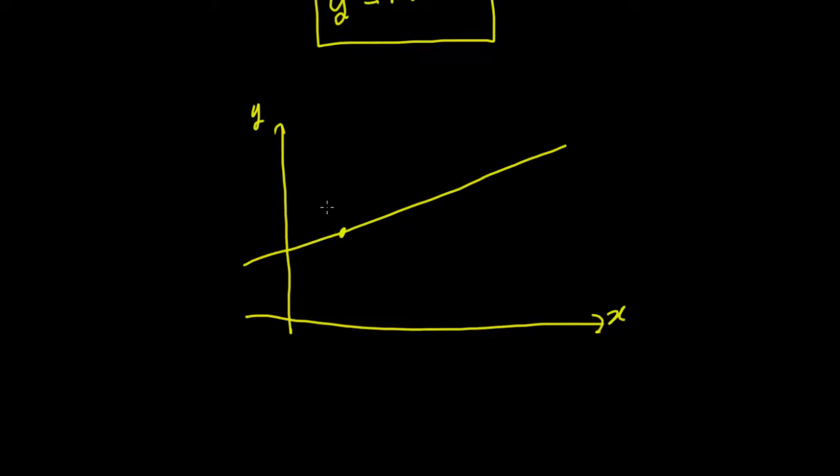Let's say that point there has got coordinates a comma b, so you come along a and then you come up b. And then we pick some other random point on the line, say the point x comma y, so you come along a distance x and you go up a distance y.